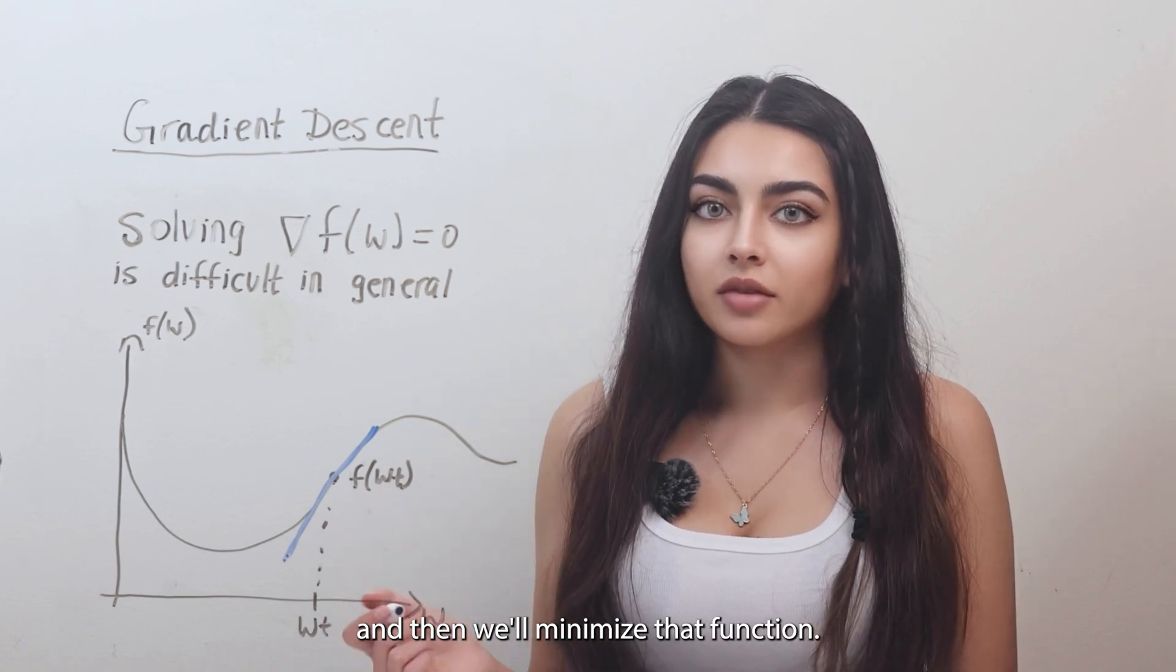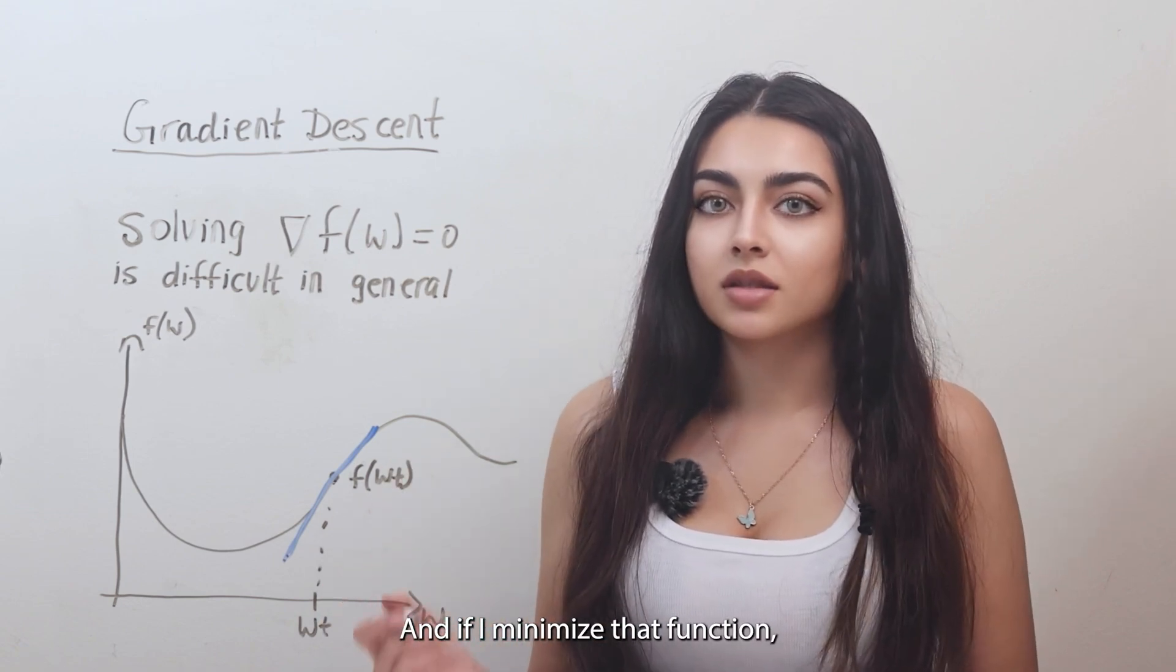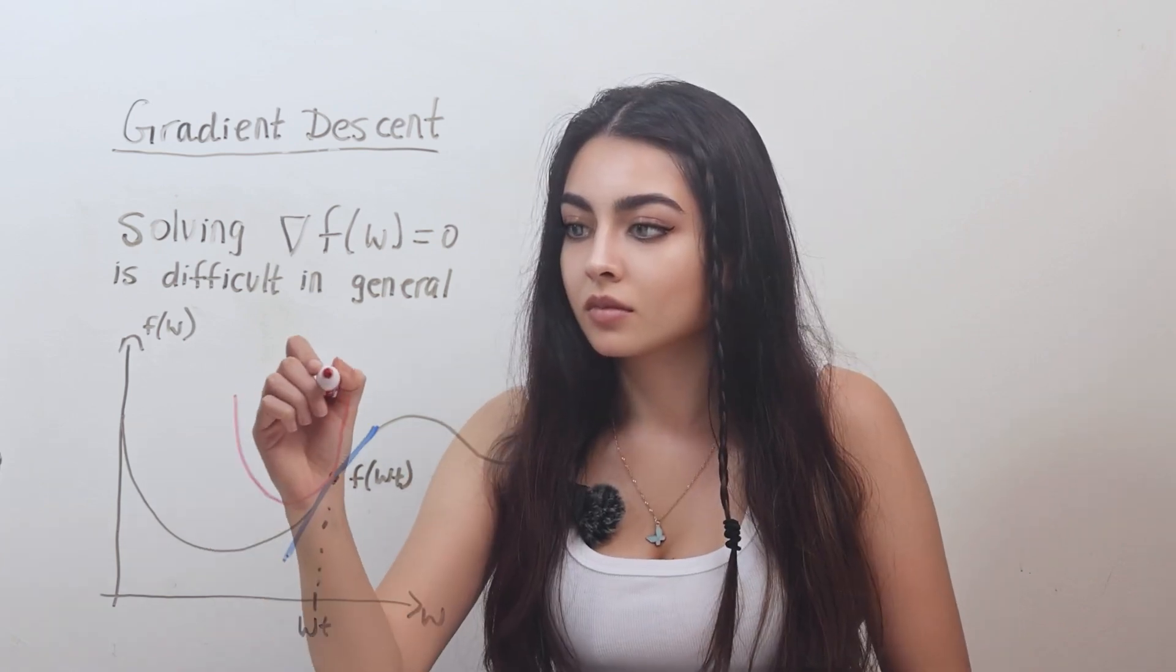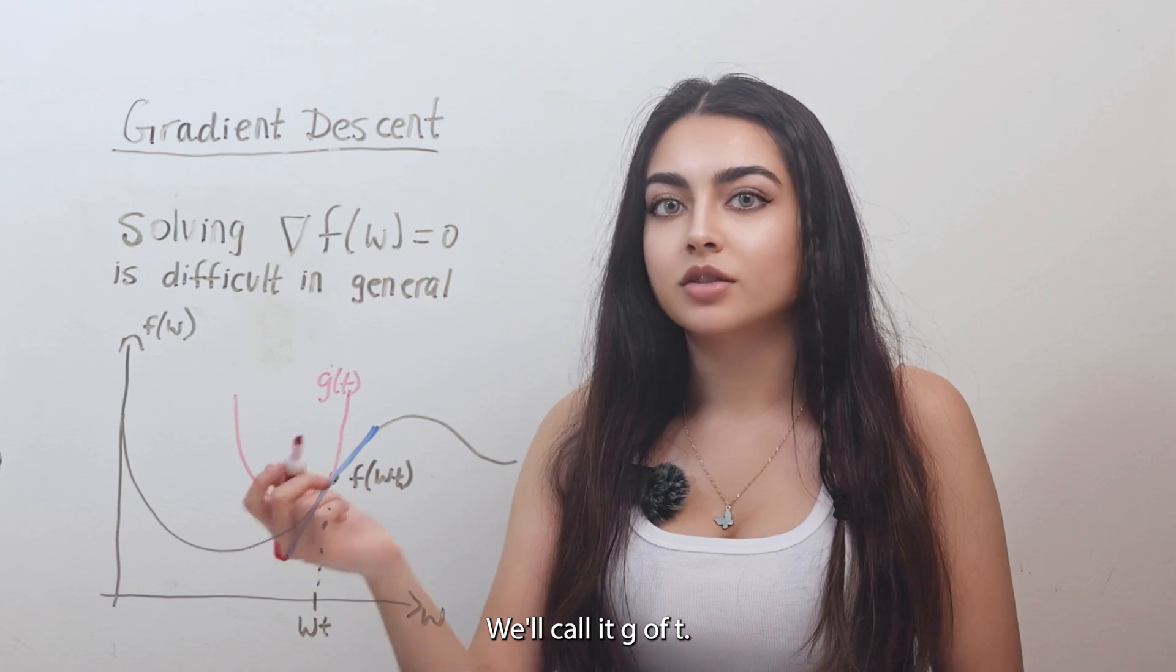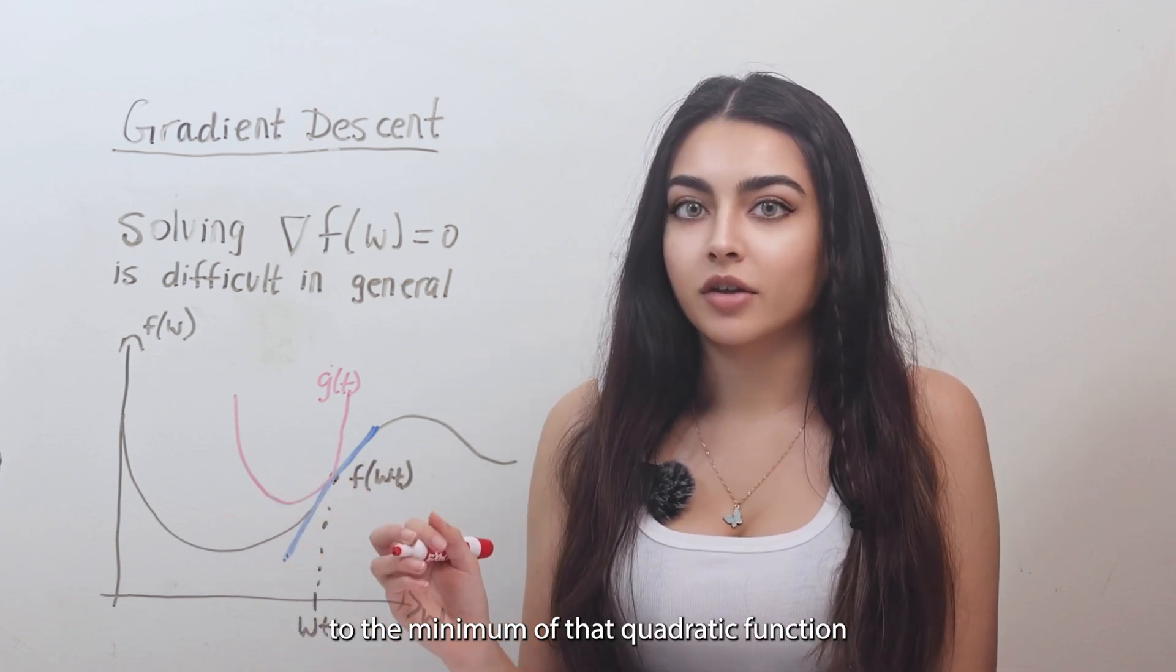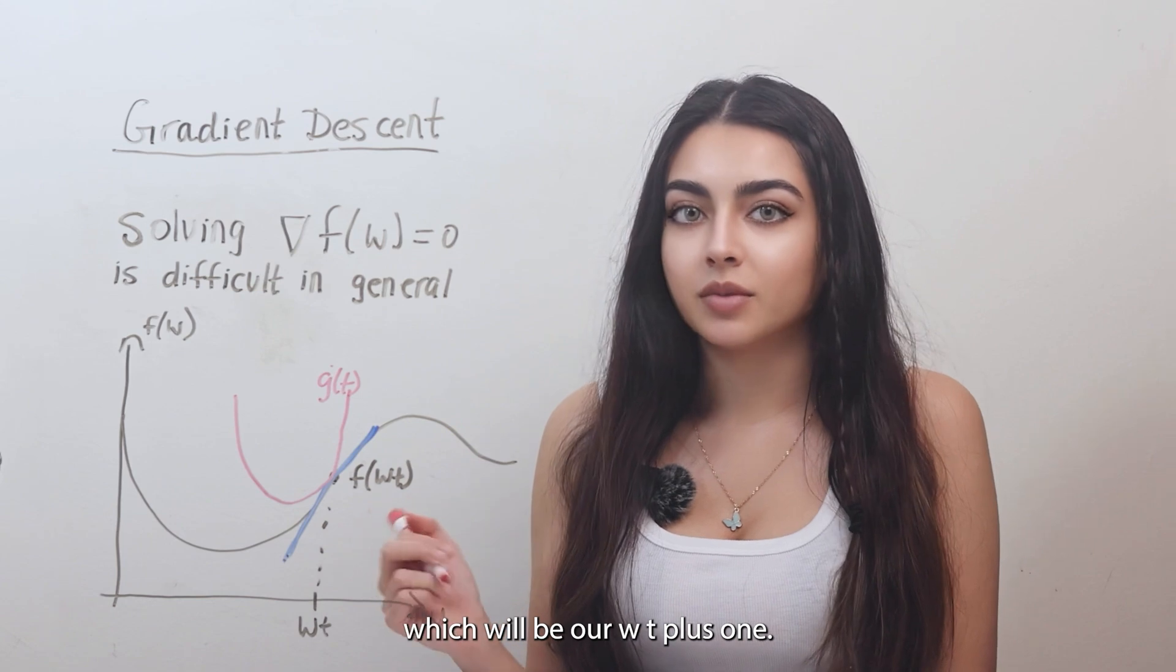Another way to think about what we will be doing is that we are trying to find a function that is always an upper bound of our f. And then we will minimize that function. And if we minimize that function, we know that we are making progress. And here is the quadratic function. We'll call it g of t. We are actually moving to the minimum of that quadratic function, which will be our wt plus one.